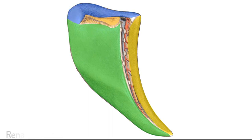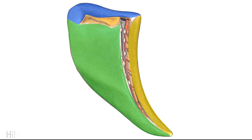Dorsally, highlighted in blue, we have the renal impression where the spleen comes in contact with the left kidney. On the visceral surface we can also see the hilum of the spleen, where the splenic artery enters the spleen and the splenic vein exits. In this area we can also find small lymph nodes related to the spleen.